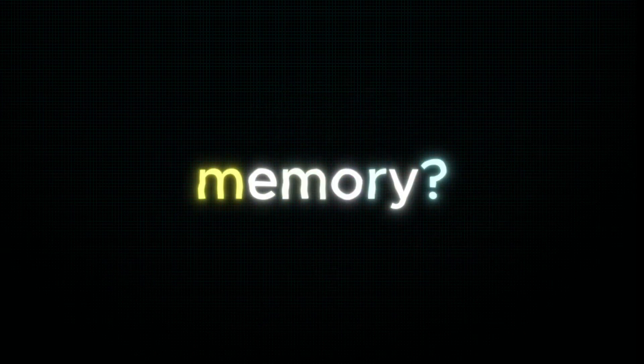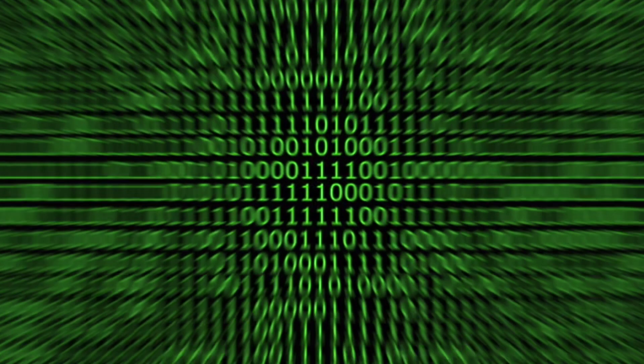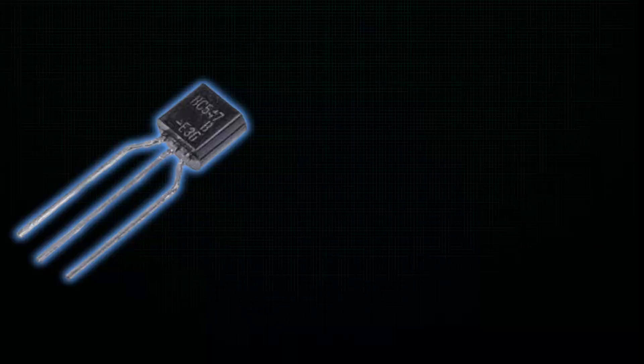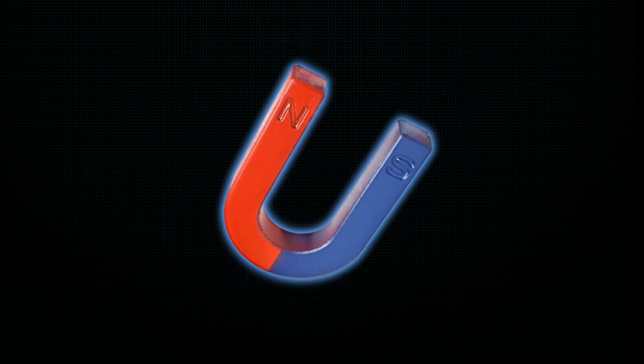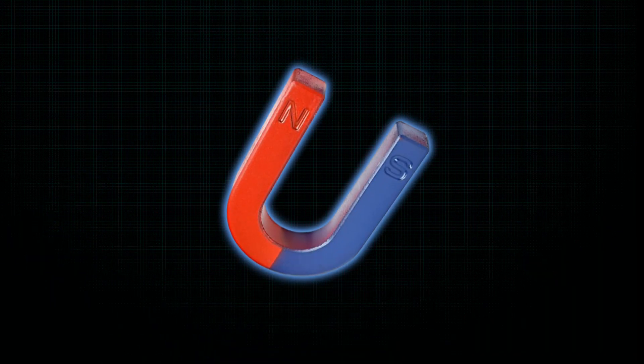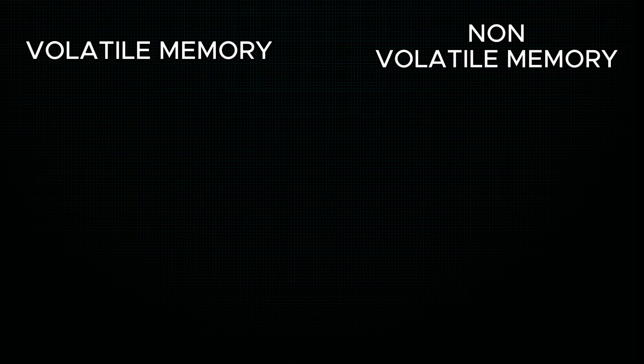Let's start with the most basic question: what really is a computer memory? Think of it as just tightly packed zeros and ones. This can be achieved with transistors and capacitors, or — not so popular nowadays — magnetic domains on spinning platters. These facts bring us to the first and most important division: volatile memory and non-volatile memory.